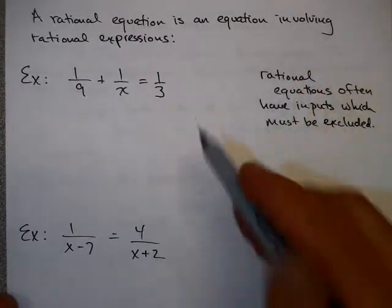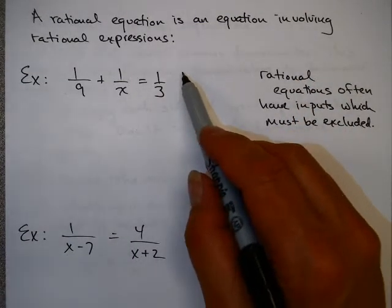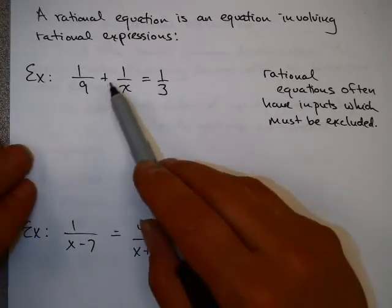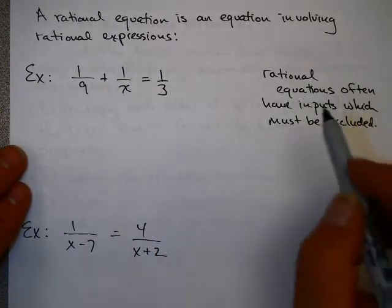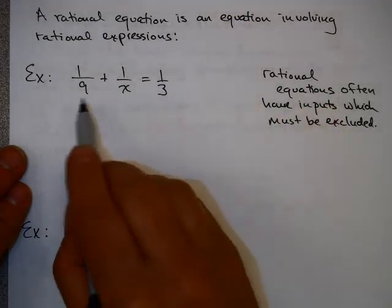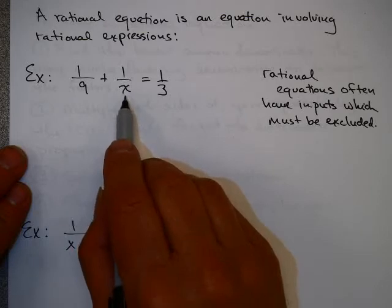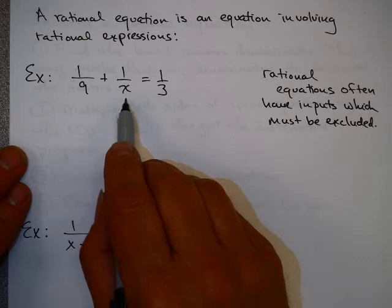A rational equation is nothing more than an equation involving rational expressions. Let's look at an example: 1/9 + 1/x = 1/3. Rational equations like this one often have a variable in the denominator, and because of that you have to be careful when solving. You may need to exclude possible values for x because there may be values that make the denominator 0.